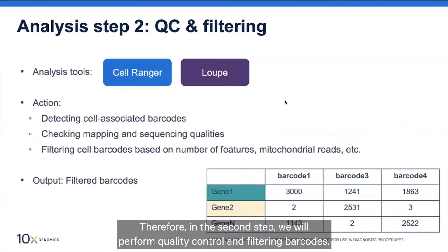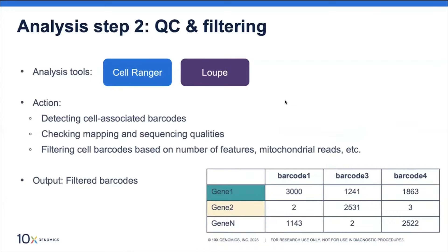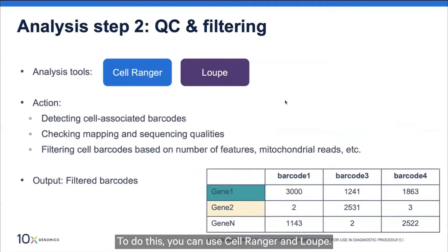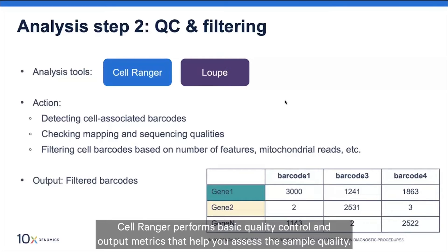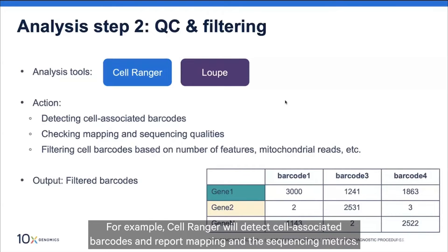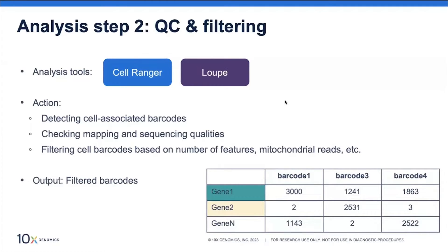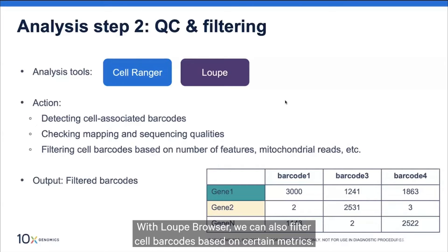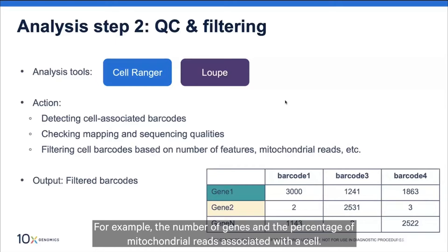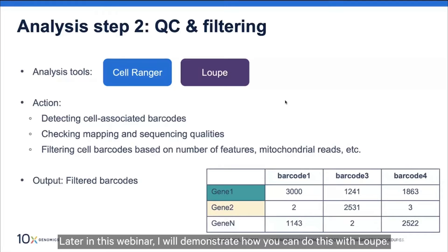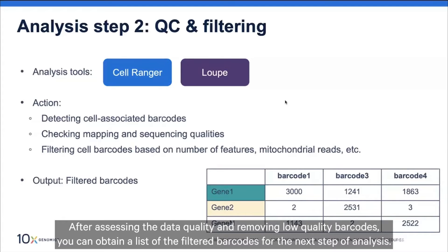In the second step, we perform quality control and filter barcodes. Cell Ranger performs basic quality control and outputs metrics that help you assess sample quality — for example, detecting cell-associated barcodes and reporting mapping and sequencing metrics. With Loop Browser, we can also filter cell barcodes based on certain metrics, such as the number of genes and the percentage of mitochondrial reads associated with a cell. Later in this webinar, I will demonstrate how to do this with Loop.